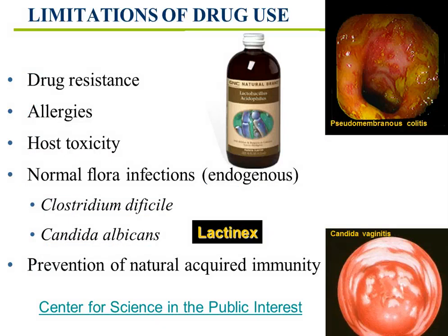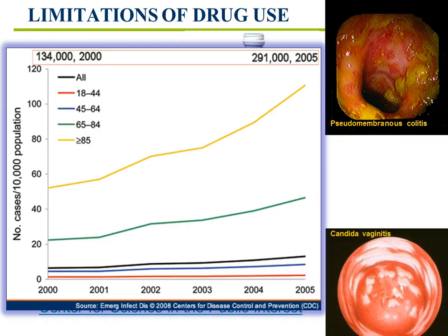C. diff colitis is usually always associated with antibiotic therapy. A chart shows the numbers of pseudomembranous colitis cases associated with antibiotic use over a five-year period — particularly notice that the most susceptible age groups are over 65, shown by the green and yellow lines.